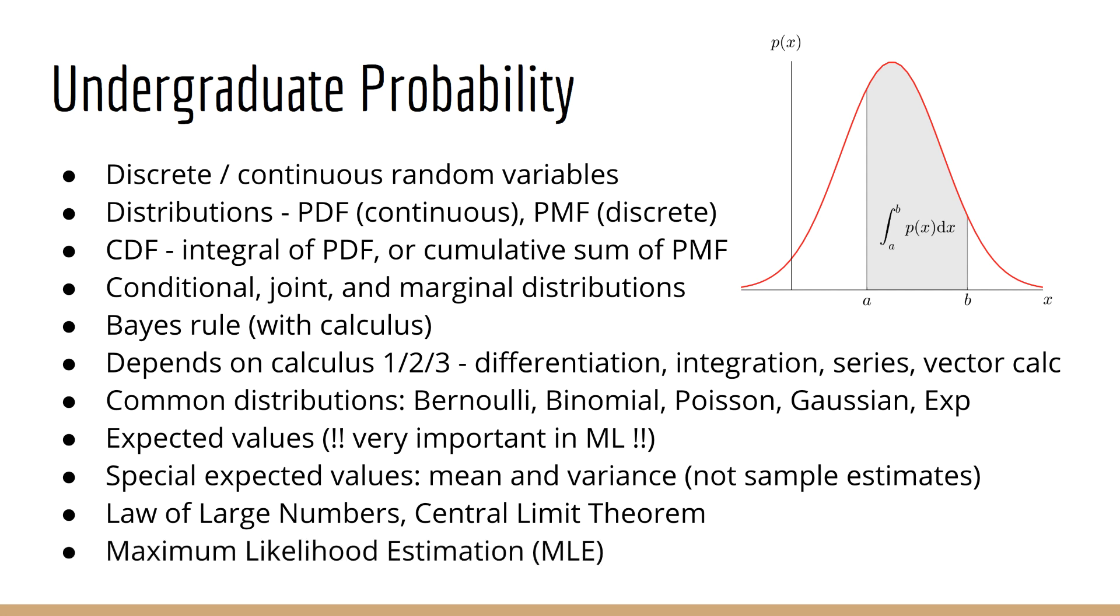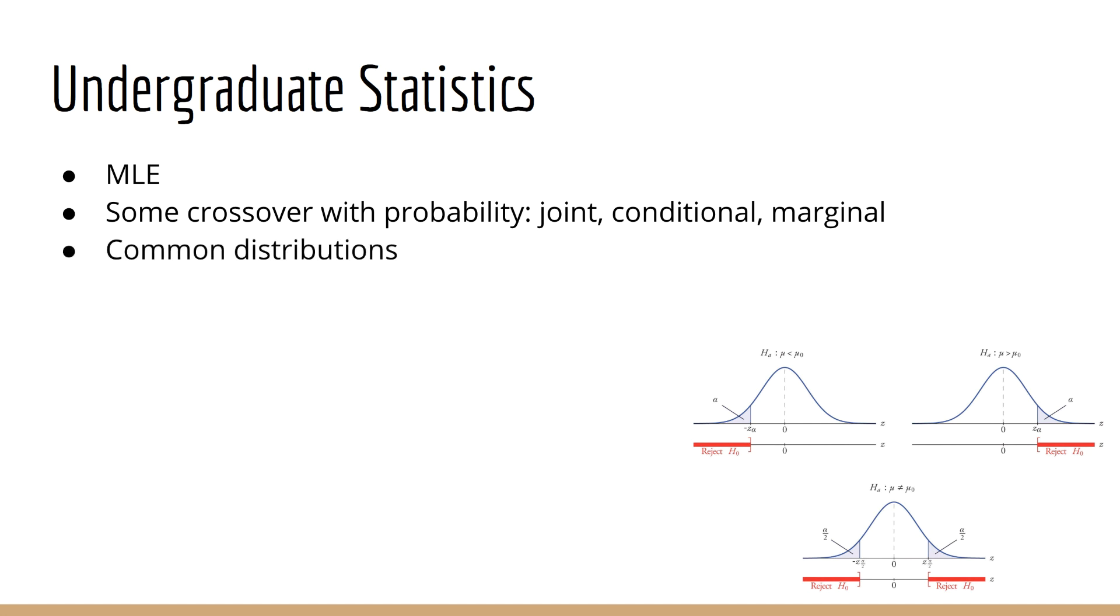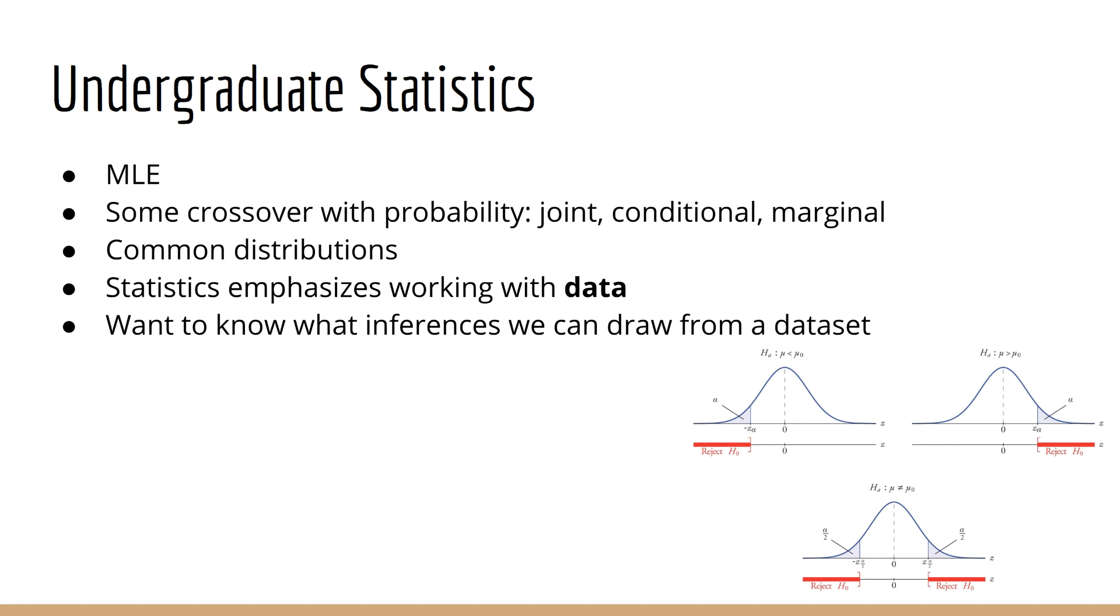In some courses, although this is usually more on the side of statistics, you'll learn about maximum likelihood estimation, which is an essential component of machine learning. So what about on the statistics side of things? As mentioned, you might learn about maximum likelihood estimation. Some of mathematical statistics will cross over with a standard probability course, so you'll still cover things like joint, conditional, and marginal distributions, and you'll study common discrete and continuous distributions like the Gaussian and the binomial. But I think the main difference on the statistics side is that it emphasizes working with data. So that's why it makes sense to do a maximum likelihood estimation. You've collected a dataset, and now you want to know what inferences you can draw from this dataset.